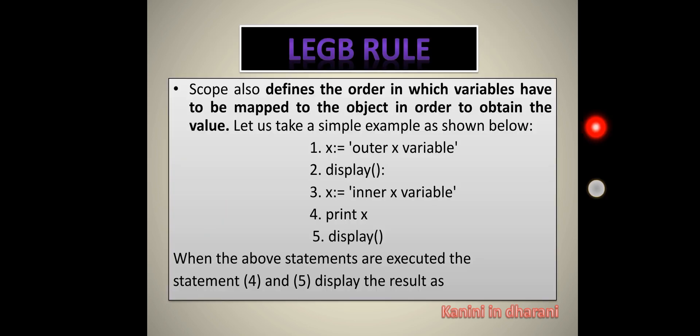If you are talking about scope, this is a lifetime — we will see the scope. Namespace is a container where names are mapped with objects. We will use variables to hold values.